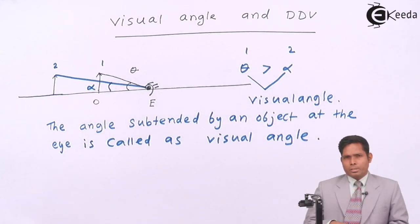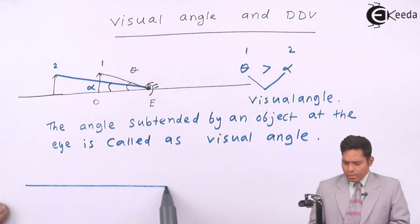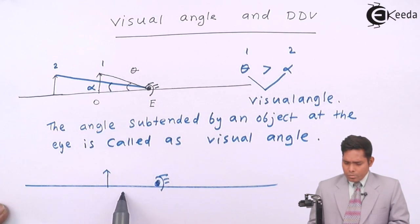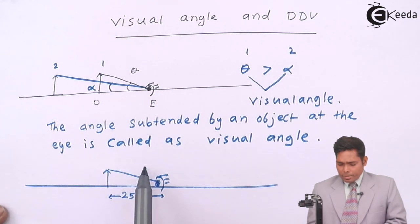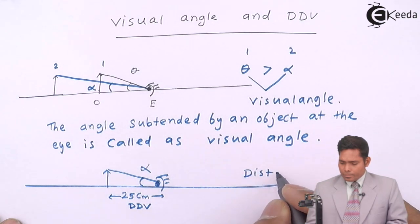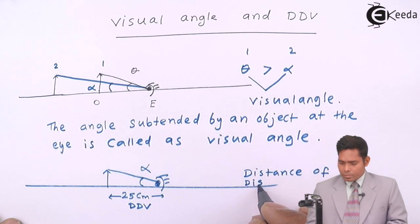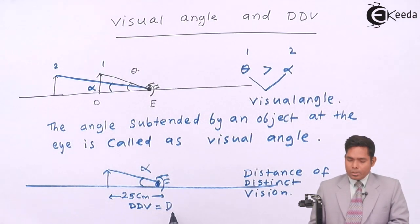The eye can see objects up to a certain range — the farthest point is infinity and the nearest point is 25 cm for a healthy eye. If I place an object 25 cm from my eye, whatever angle it subtends — suppose the angle is alpha — this is the visual angle subtended when the object is at DDV. DDV means distance of distinct vision, sometimes called simply 'd', where d equals 25 cm.